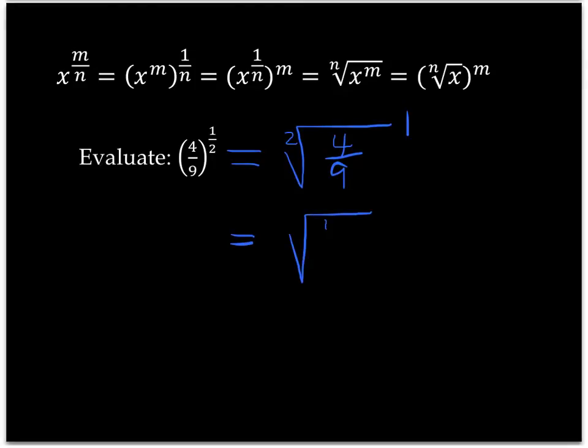Once again, that index of 2 is unnecessary. It's the same thing as just saying a square root. And the exponent of 1 is unnecessary. So, now that gives me the square root of 4 over 9. And, of course, that is 2 thirds.